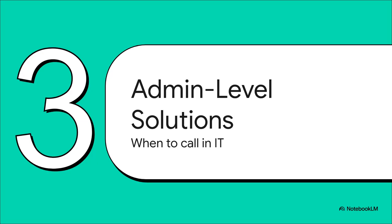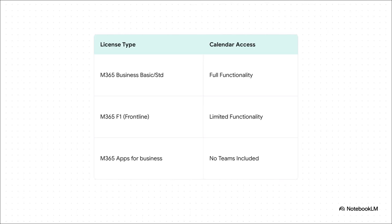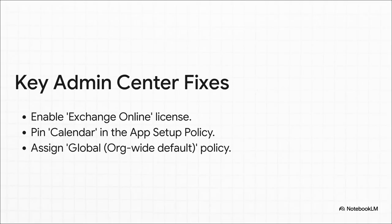So what if you've tried all that and you're still stuck? It might be time to call in the big guns — your IT admin. These are the solutions that require administrator access, so these are the things you'll want to share with your IT department. Not all Microsoft 365 licenses are created equal, and it has a huge impact on your Teams calendar. Business Basic or Standard licenses include full functionality, but an F1 license for frontline workers or the Apps for Business plan may have limited or no calendar features. Your IT admin can check this. When you talk to your admin, ask them to check three things in the Teams admin center: make sure your Exchange Online license is turned on — that's the engine running the whole calendar — then use a policy to pin the calendar app to your sidebar so it can't get unpinned, and finally make sure you're part of the main company-wide policy that grants access to these basic features.